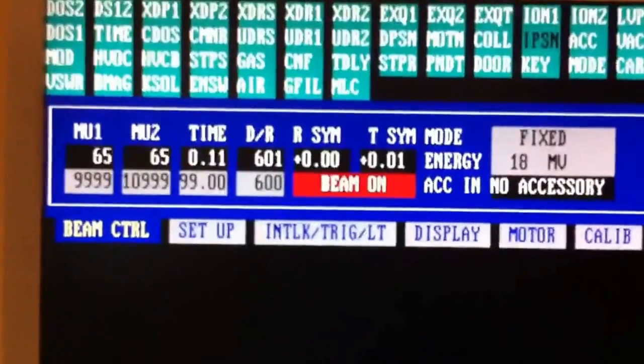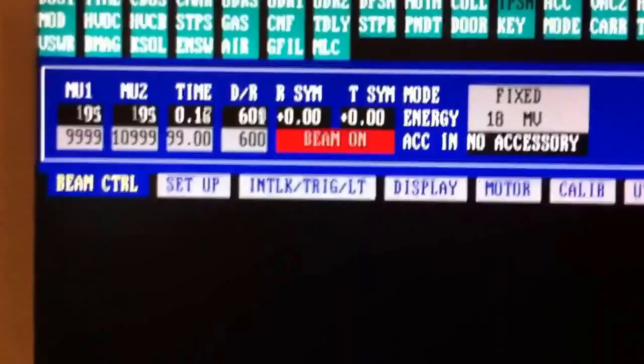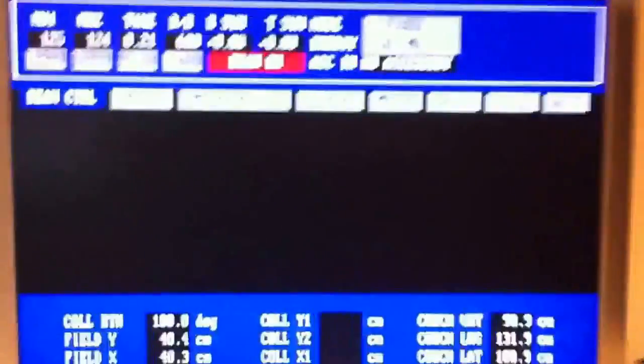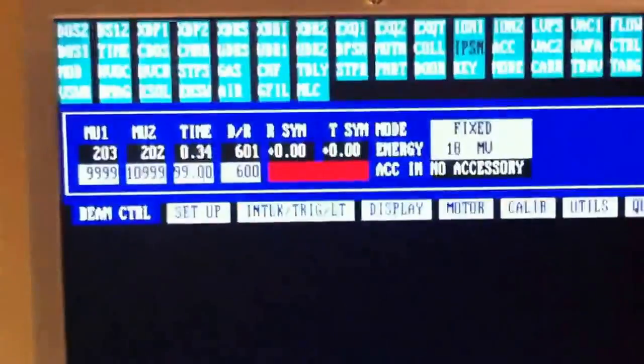Check that out. Personal dosimeters going off through the walls. You'll notice the dosimeters are going off. Even with thick concrete walls, you can still get stuff coming through.